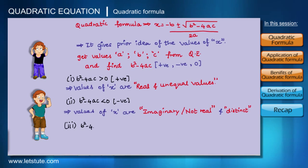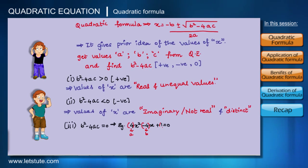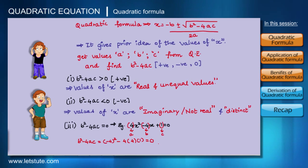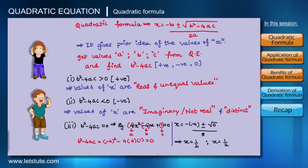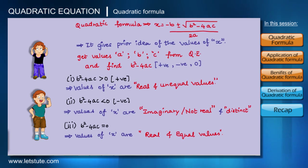Now, if b² minus 4ac equals zero, let's take the quadratic equation 4x² minus 4x plus 1 equals 0, where a equals 4, b equals minus 4, and c equals 1. Here b² minus 4ac equals 0. Solving using the quadratic formula, we get x equals one-half, appearing twice. The two values of x are equal and they are real values. So whenever b² minus 4ac equals zero, the values of x will be equal and real.